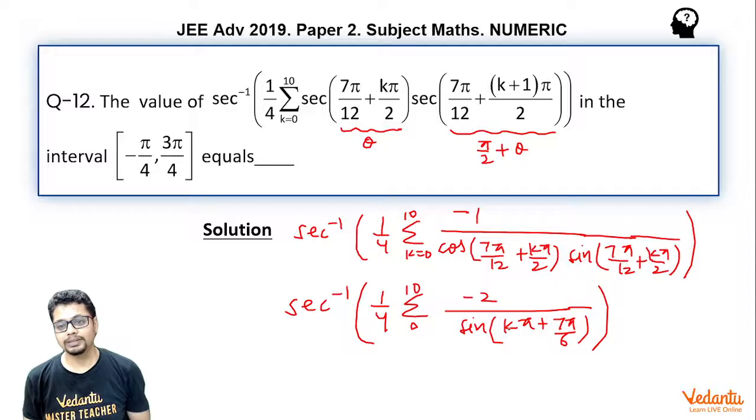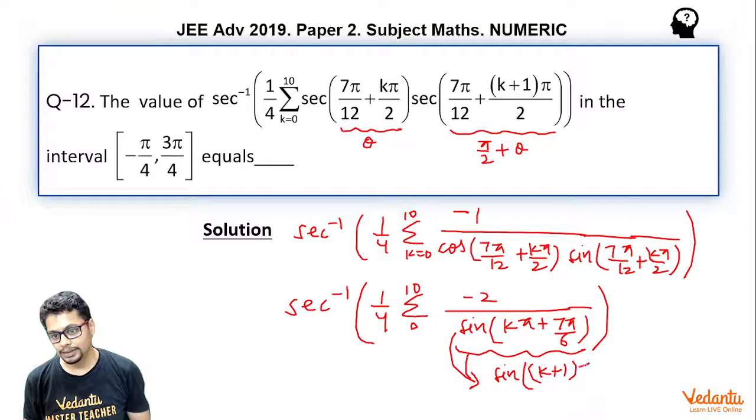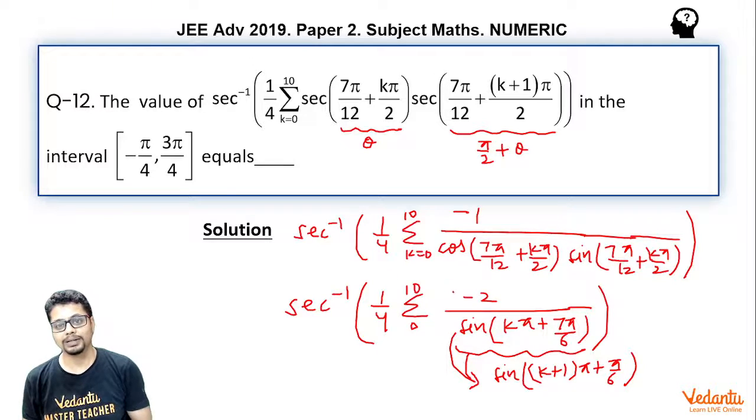Now, you can say sine k pi plus 7 pi by 6 is essentially, if you just consider this expression, it is sine k plus 1 pi plus pi by 6. So I can write this expression, let's go to next slide.